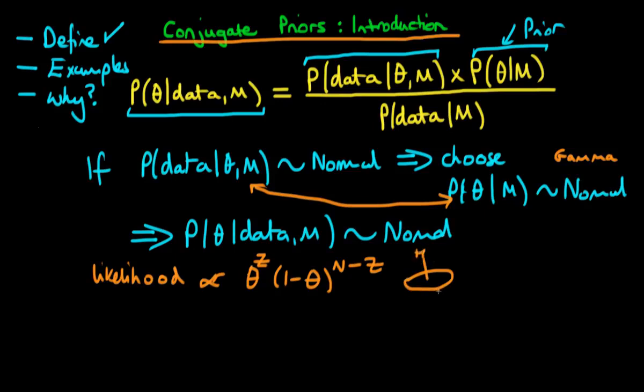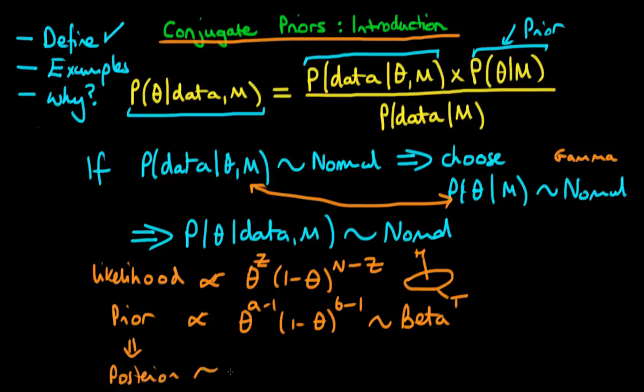Then the idea here is that if we choose a prior which turns out to be of the form theta to the power a minus 1 times 1 minus theta to the power b minus 1, which actually turns out is a beta distribution, then it turns out that you can work out after quite a lot of mathematics that the posterior distribution is also a beta distribution, with the parameters of this new beta distribution depending on the original z, a, and b, and in this case also n.